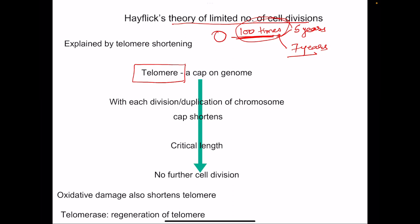This is kind of maintaining the structure of the genome. After a critical length, there can't be any further cell division, and when such cell dies we cannot further increase the number of cells. This Hayflick's theory of limited number of cell divisions is explained by the presence of telomere. Remember that oxidative damage also shortens the telomere. It already has a fixed number of divisions, but this telomere is further shortened by oxidative damage.